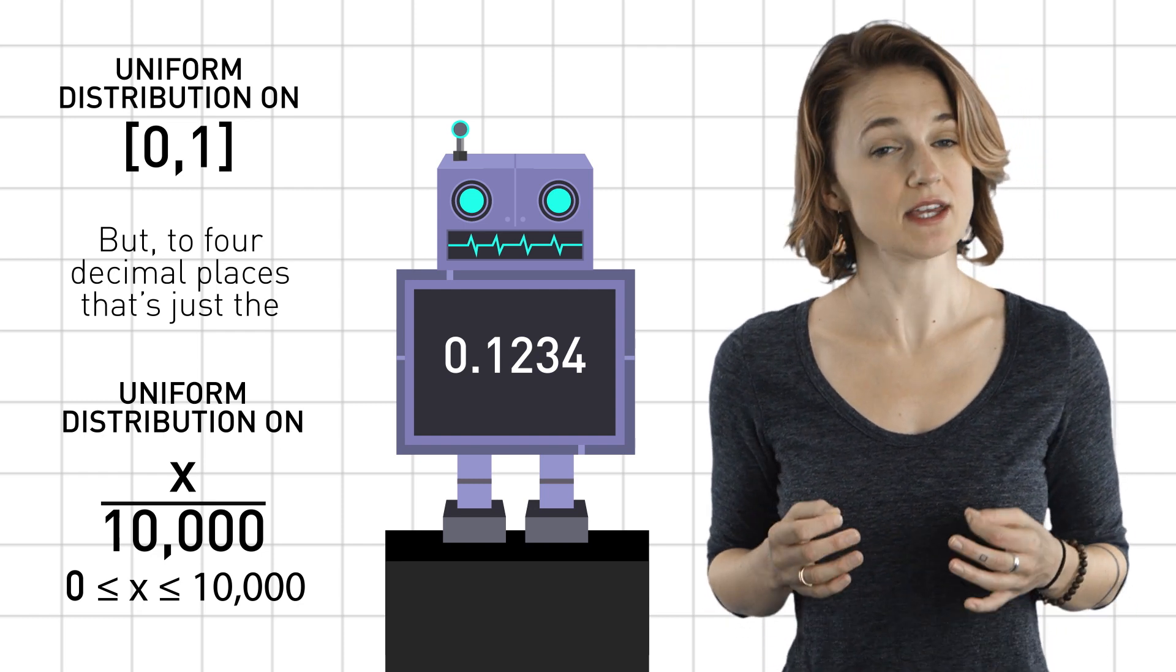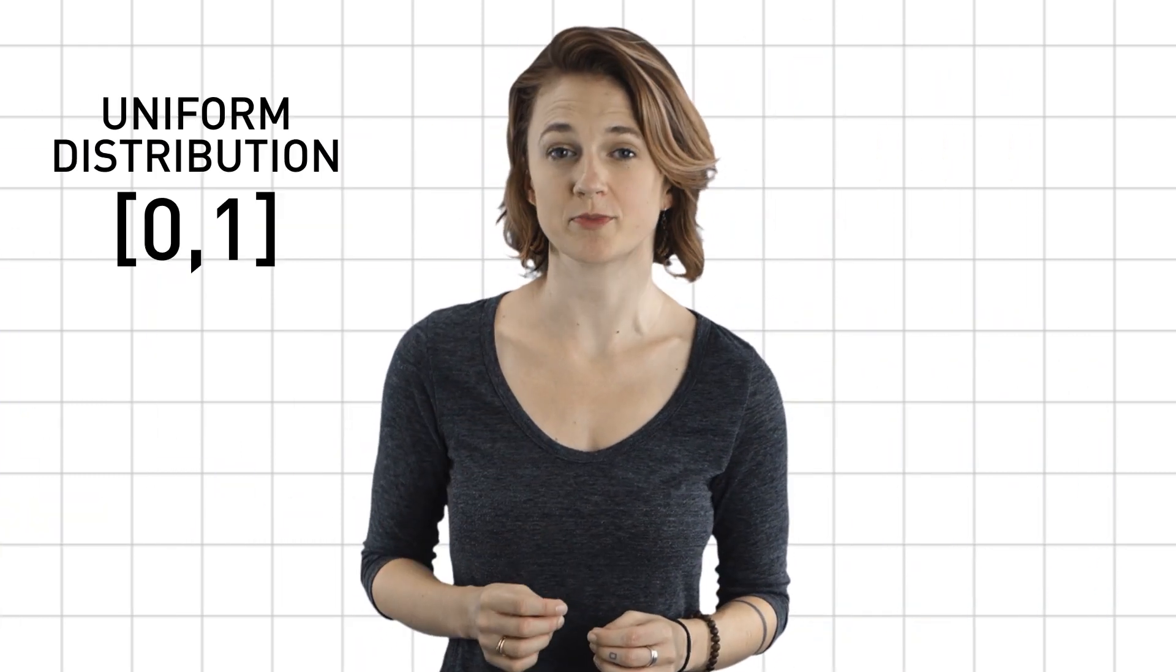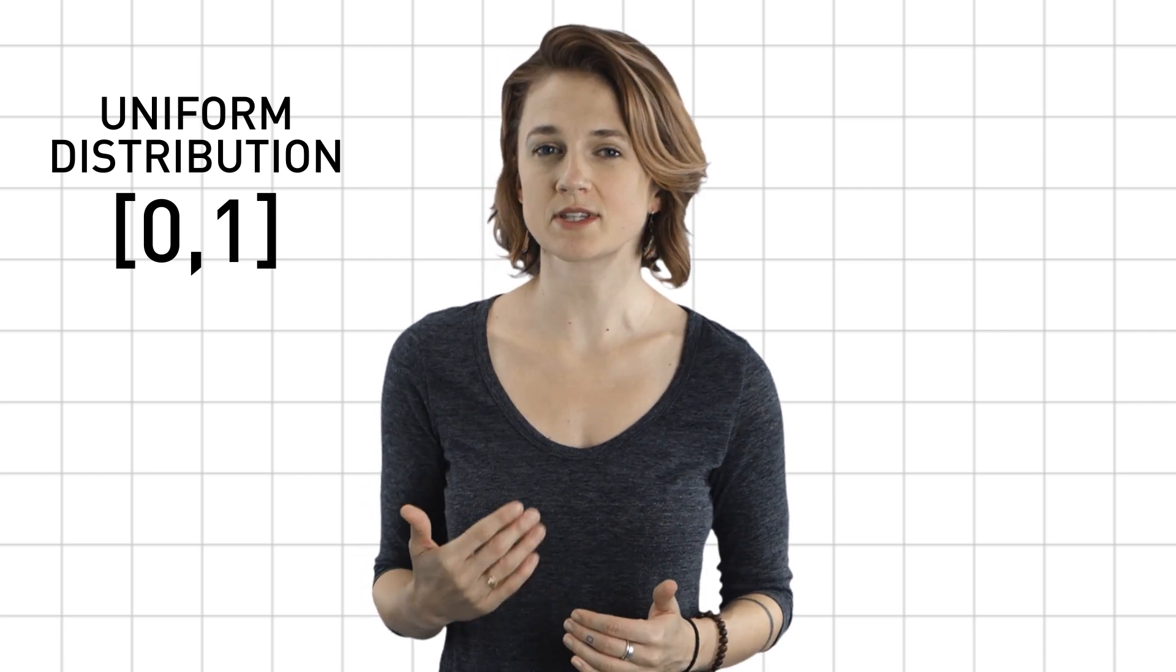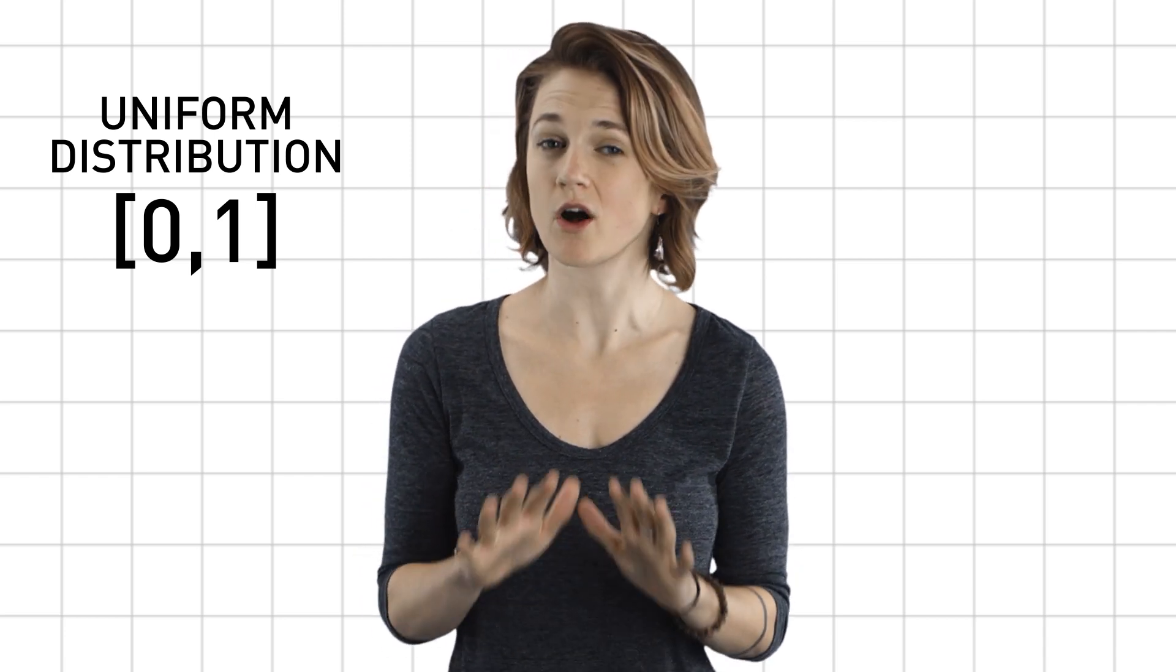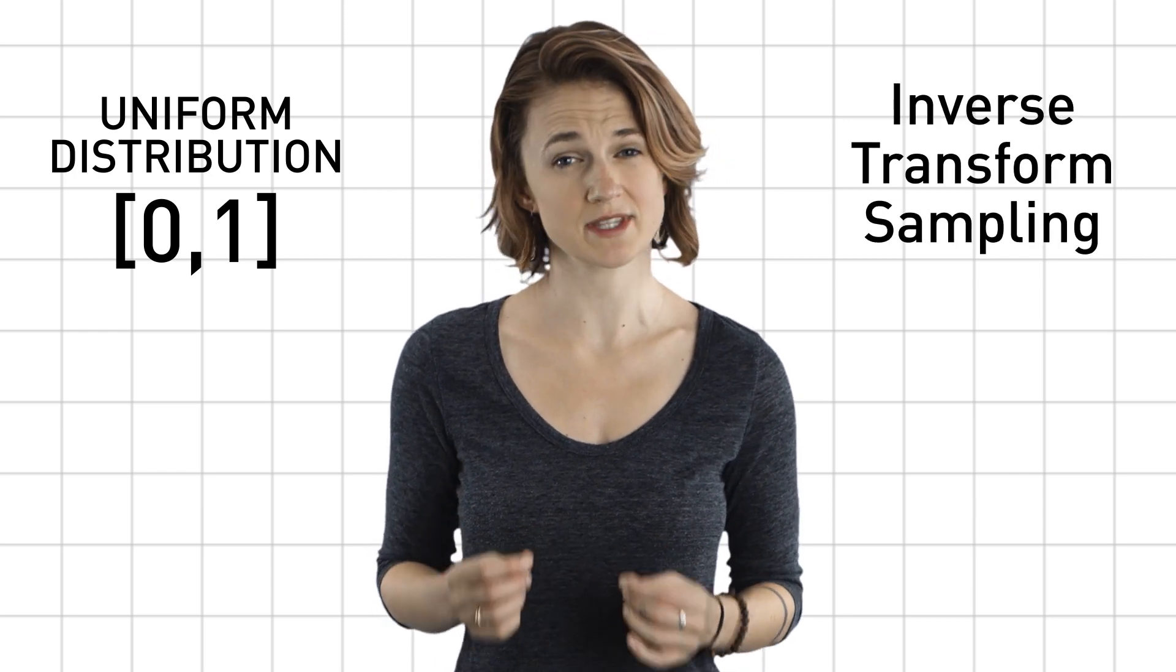Just divide the sequence of integers by 10,000. This is useful because with a sequence of numbers with the uniform distribution on 0, 1, we can generate sequences of random numbers according to other distributions using something known as inverse transform sampling.